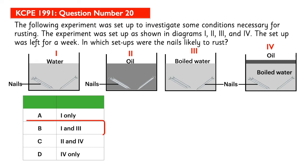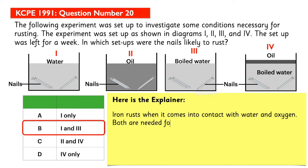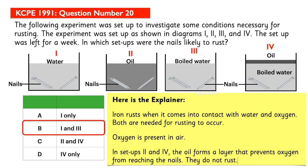The answer is B. Iron nails in setups 1 and 3 are likely to rust. Here is the explainer: iron rusts when it comes into contact with water and oxygen — both are needed for rusting to occur. In setups 1 and 3, both water and oxygen are present. The water in setup 3 was boiled to remove oxygen; however, the setup was left open and oxygen in the atmosphere will dissolve in the water, so rusting is likely to occur. In setups 2 and 4, the oil forms a layer that prevents oxygen from reaching the nails, so the nails are not likely to rust.